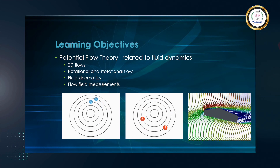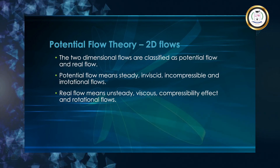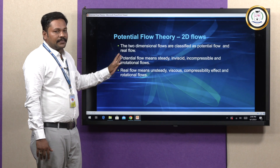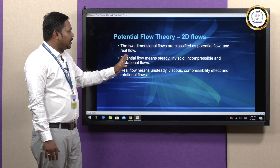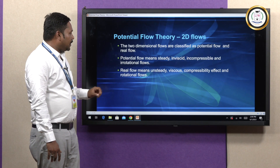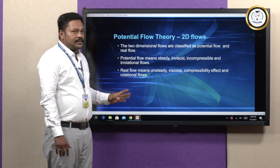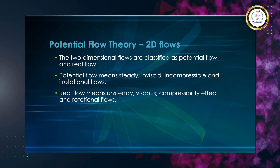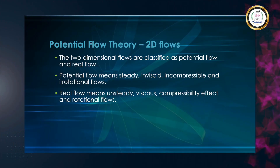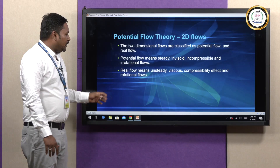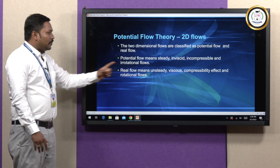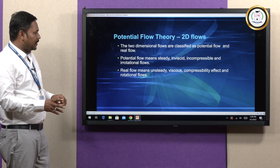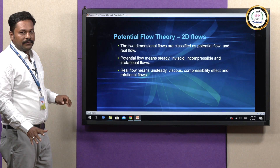Here we have 2D flows. What is meant by 2D flow? It has been classified as potential flow and real flow. Potential flow means steady, inviscid, incompressible, and irrotational flows. Real flow means unsteady, viscous, with compressibility effects and rotational flows.